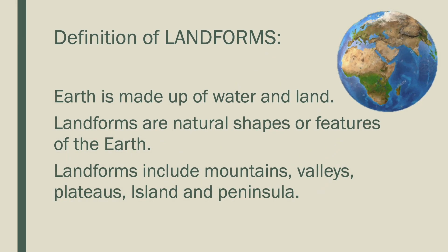Definitions of landforms. First, Earth is made up of water and land. Landforms are natural shapes or features of the Earth. Landforms include mountains, valleys, plateaus, islands, and peninsulas.